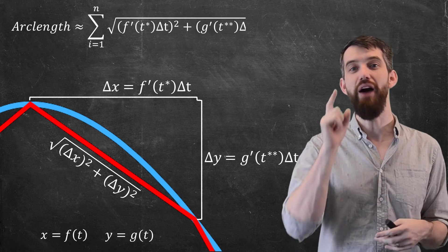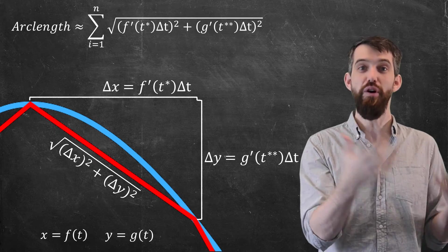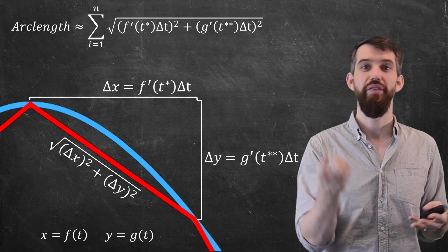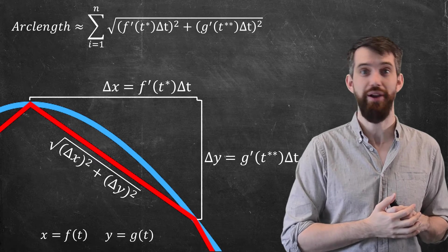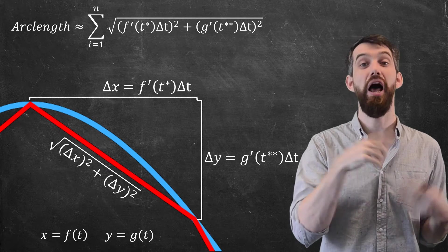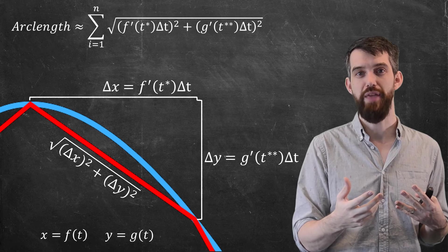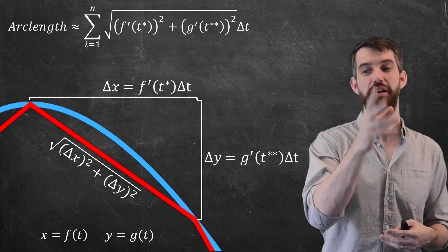So what do I have? This is the summation of the square root of, first of all, the delta x squared, a.k.a. the f prime delta t all squared, and then plus the delta y squared, a.k.a. the g prime squared times delta t squared. I'm then going to factor out a copy of delta t.